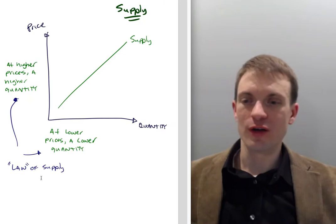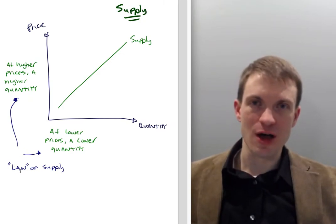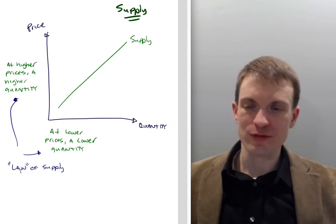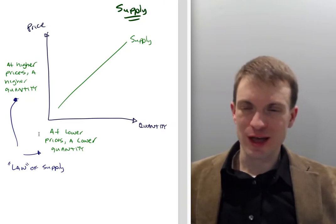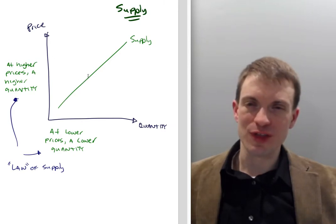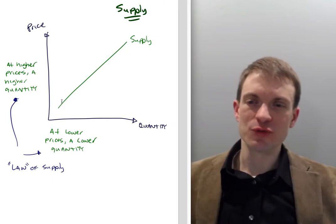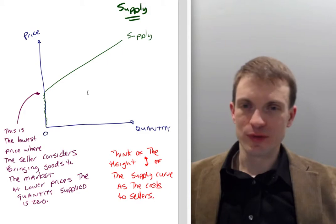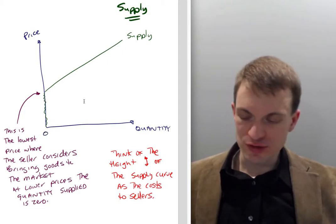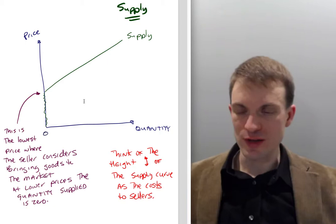This is our law of supply — though I put 'law' in quotation marks, because unlike the law of demand, which typically holds for a variety of reasons, with supply you can sometimes get different things going on. You can get a horizontal supply curve and other interesting variations. We feel a little more confident generalizing across the law of demand than the law of supply.